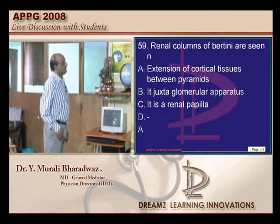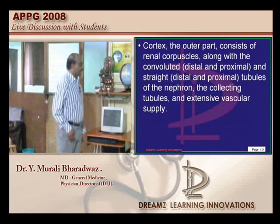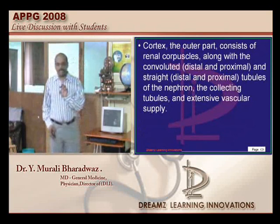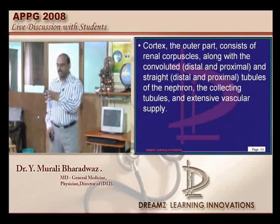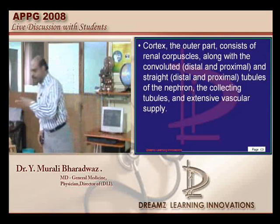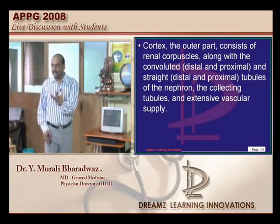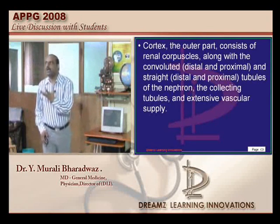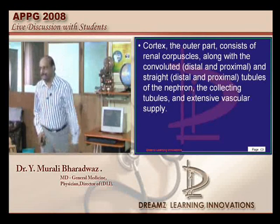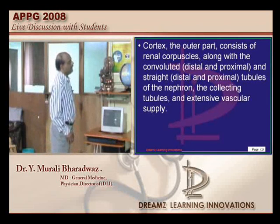Where do you find the renal columns of Bertin? They are the typical cortical tissues which drive into the medulla in the renal hilum — called the columns of Bertin in kidney tissue. So A becomes the answer here.